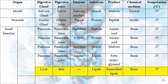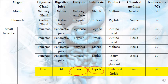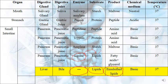Last but not least, the liver secretes a juice called bile. However, bile contains no enzyme — it is the only digestive juice without an enzyme. The role of bile is emulsification of lipids: it does not fully digest lipids into fatty acids and glycerol itself, but it breaks large lipid molecules into smaller emulsified lipid droplets. The medium is basic and temperature is 37 degrees. Lipase then digests these smaller particles into fatty acids and glycerol.